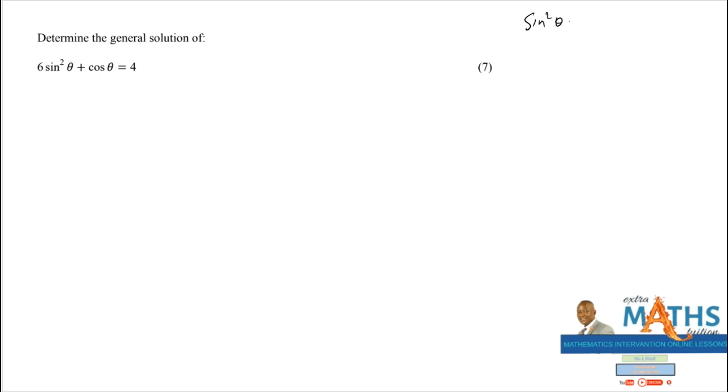If we are dealing with a general solution, please make sure that you solve for one thing and only one thing. On this question, we have sin θ and also cos θ. We cannot solve for sine and cos at the same time. What I like about this question is that it will remind you of the square identity: sin²θ + cos²θ = 1. If you make sin²θ the subject of the formula, it will be sin²θ = 1 - cos²θ.